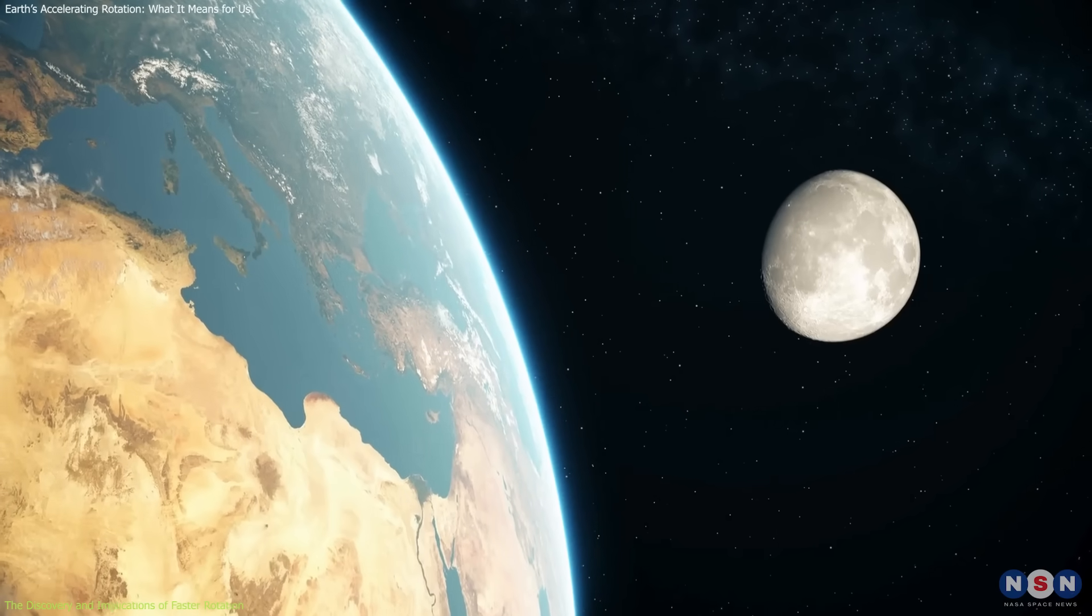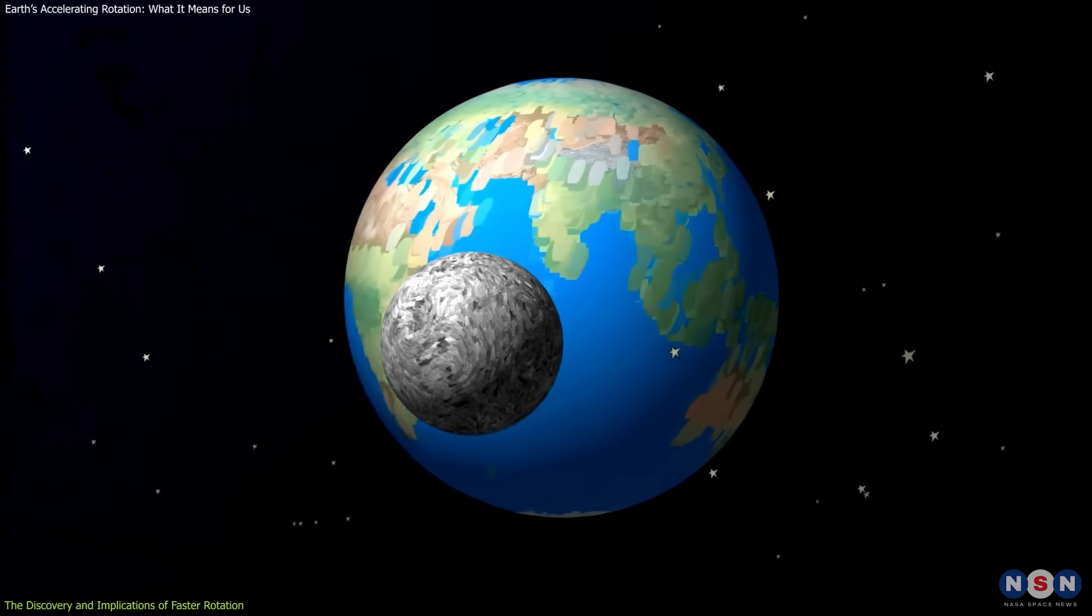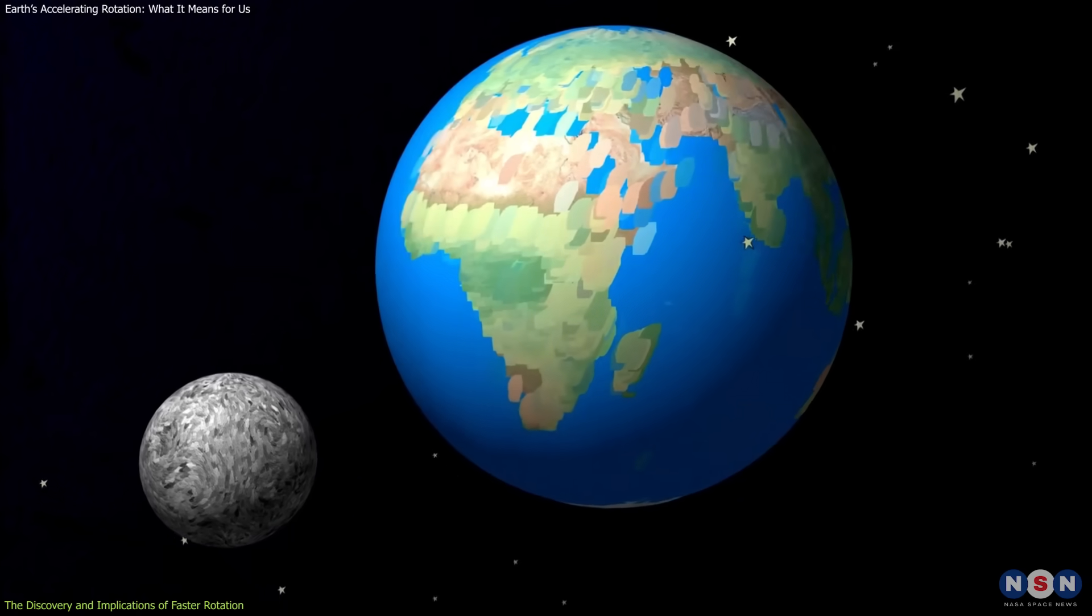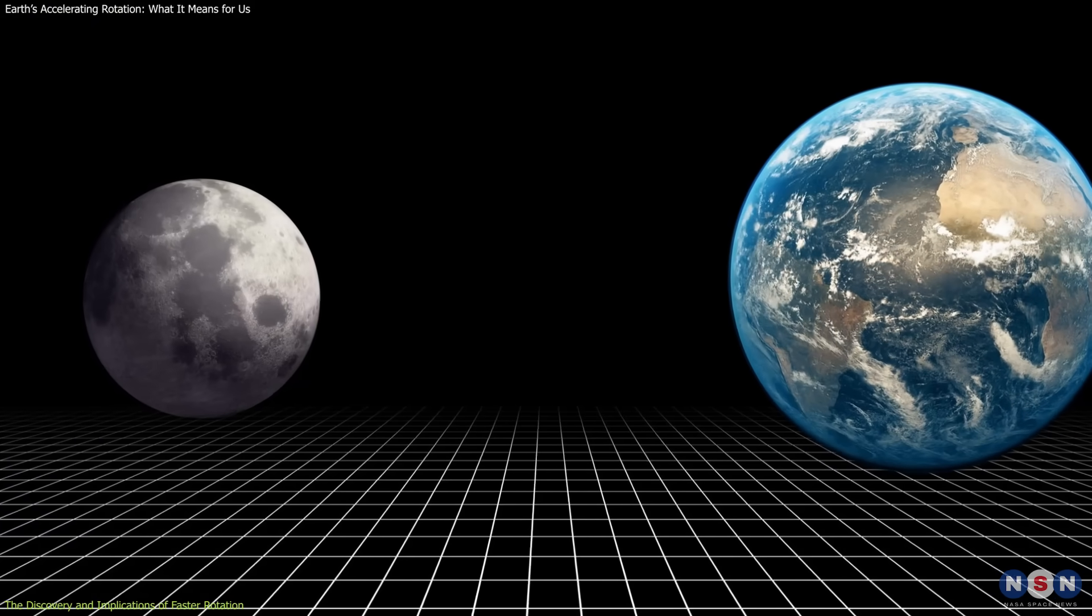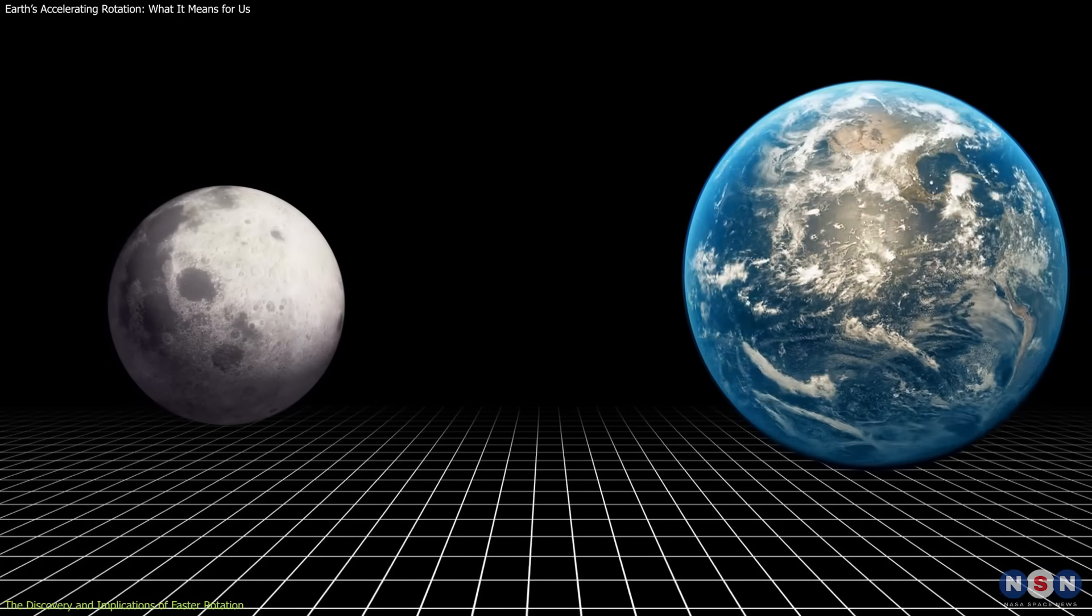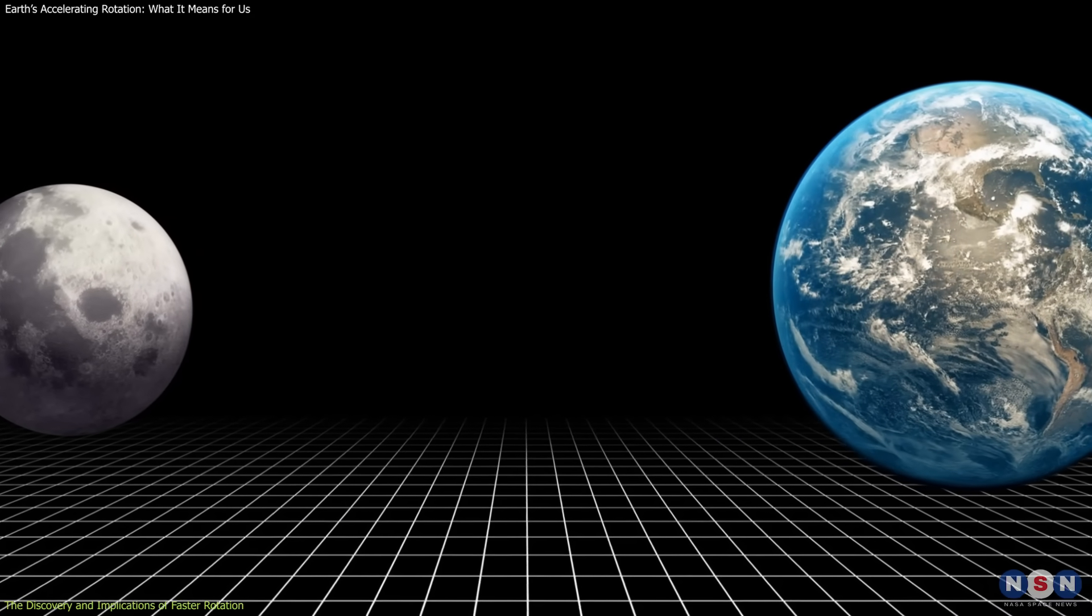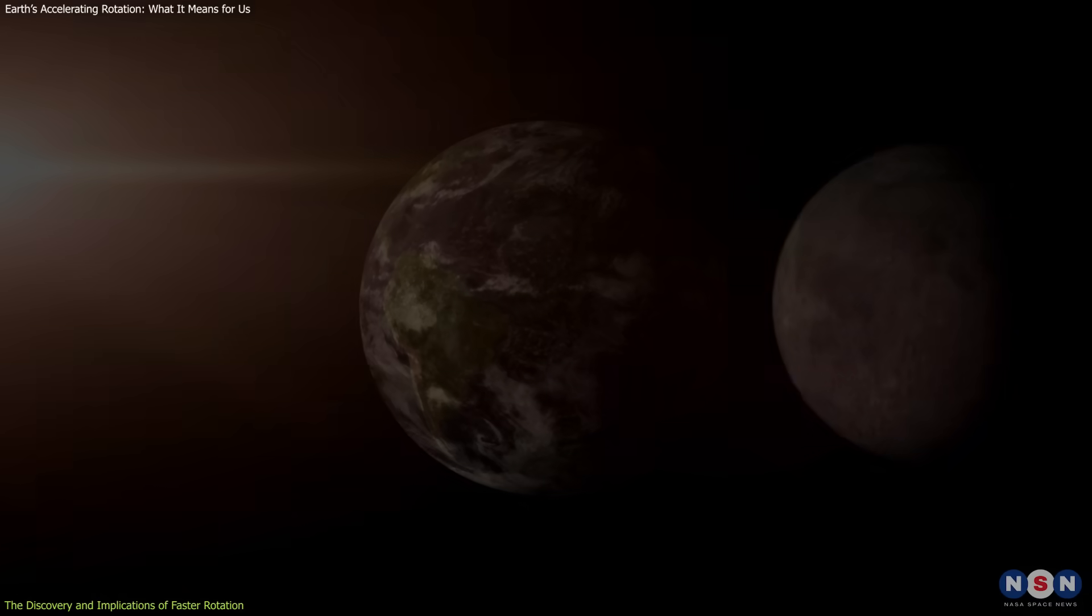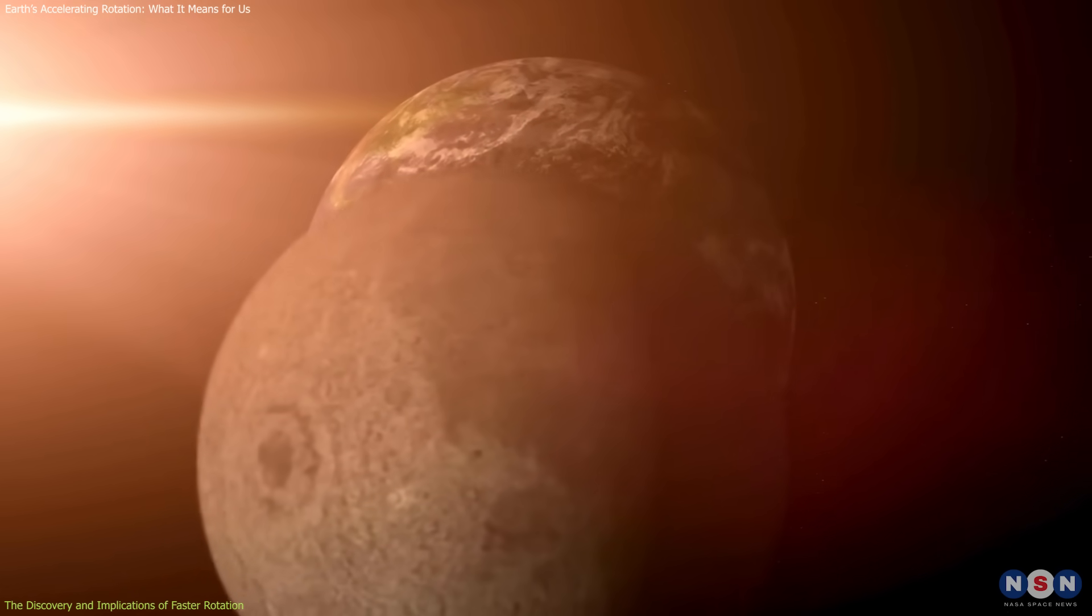The root cause of this phenomenon lies in the relationship between Earth and the moon. The moon's gravity doesn't affect Earth's rotation in a simple, constant manner. When the moon is closer, its gravitational pull is stronger, leading to a slight increase in Earth's rotation speed. Conversely, as the moon moves farther away, Earth's rotation slows down.